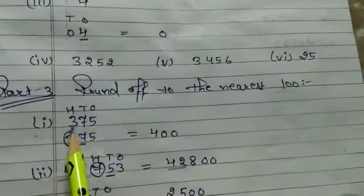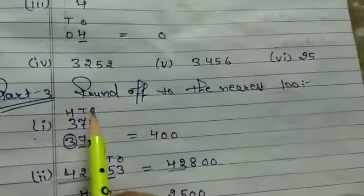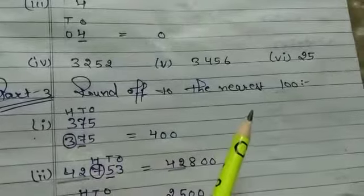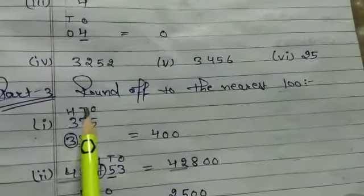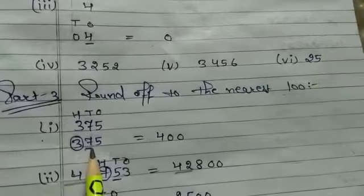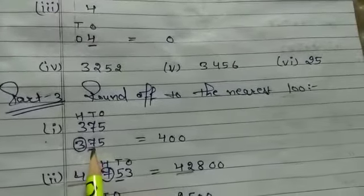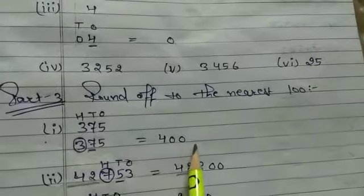This is the first question: 375. You have to work the same way but now you have to do it with the hundreds place. Circle the hundreds place and check the next digit. 7 is greater than 5, obviously you have to add one. So the answer is 400. Clear?